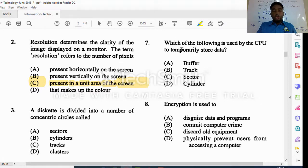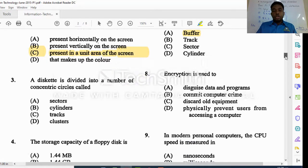The next question says which of the following is used by the CPU to temporarily store data. If you're temporarily storing data, we know that location to be the buffer. Buffer is a temporary location to store data, so we select buffer here. Track, sectors, and cylinder relate to your drive, for example your floppy disk drive.